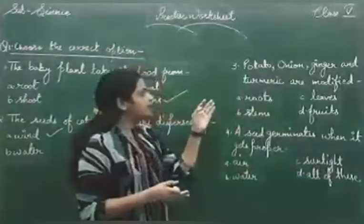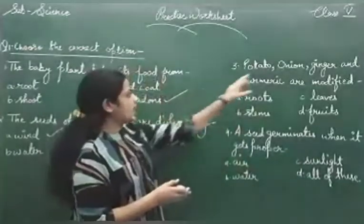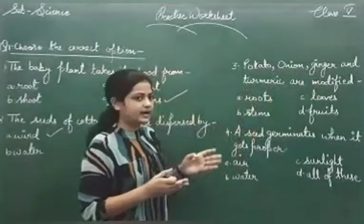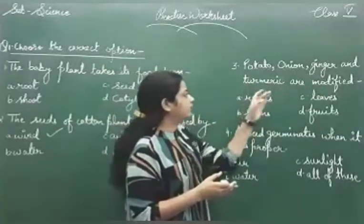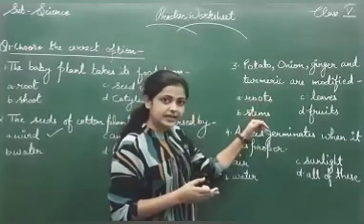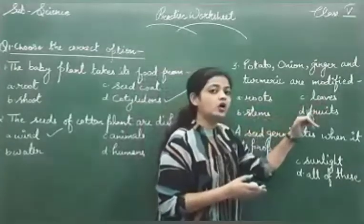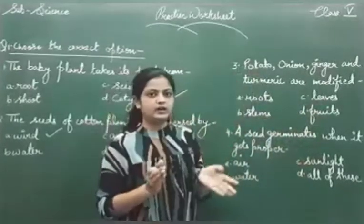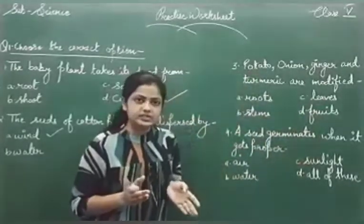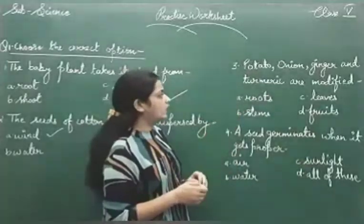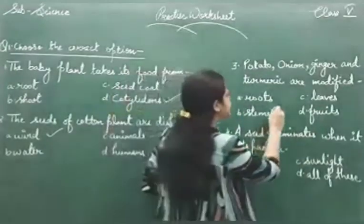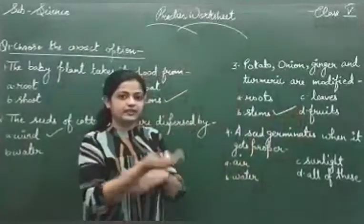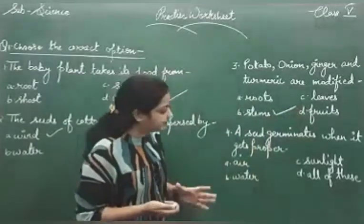The next question is: potato, onion, ginger, and turmeric — what are they? Are they modified roots, modified stems, modified leaves, or fruits? These are all vegetables we eat, and they are all modified stems. They are the modified stems that we consume as daily vegetables.